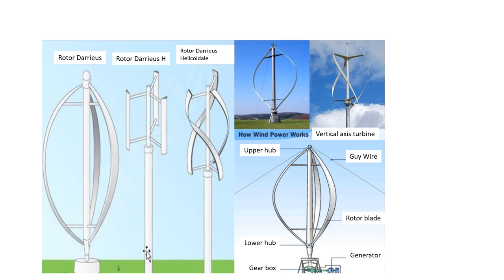The main types of vertical axis wind turbines are shown here. The designs are the Darrieus, Darrieus H, and Darrieus Helicoidal. The main parts of these vertical axis wind turbines are the upper head, guy wire, rotor blade, generator gearbox, and lower hub. The gearbox and generator could be placed at the base portion of the wind turbine.